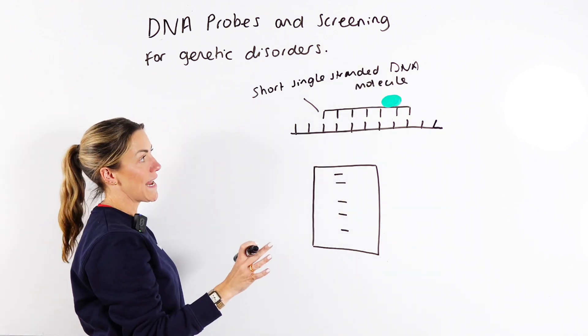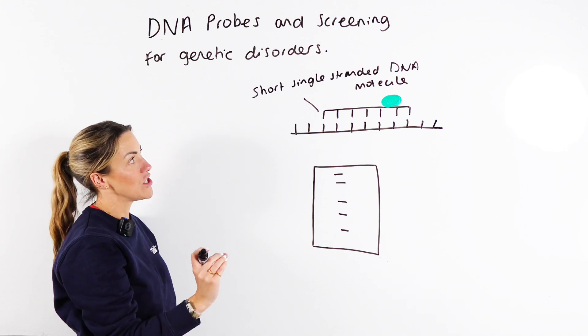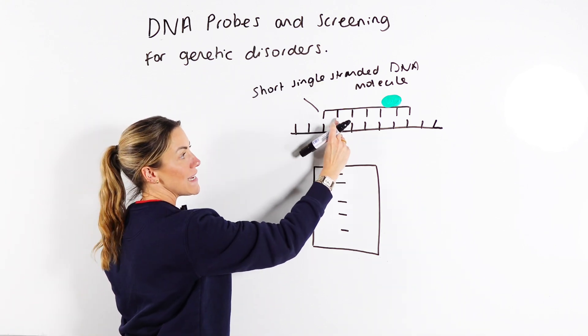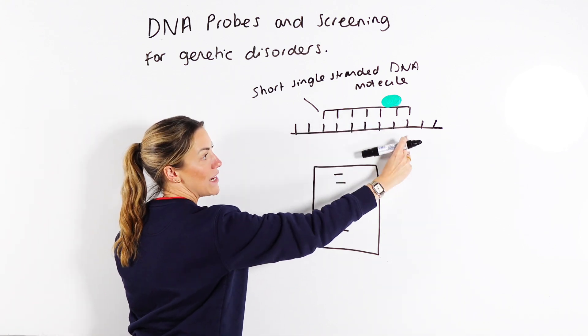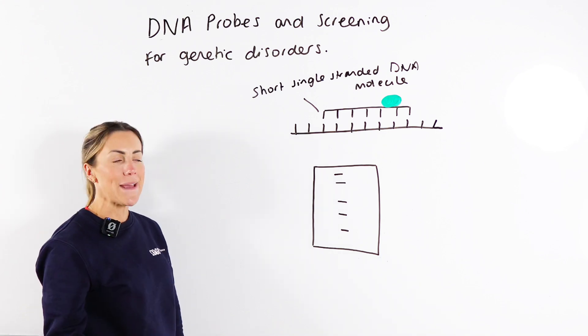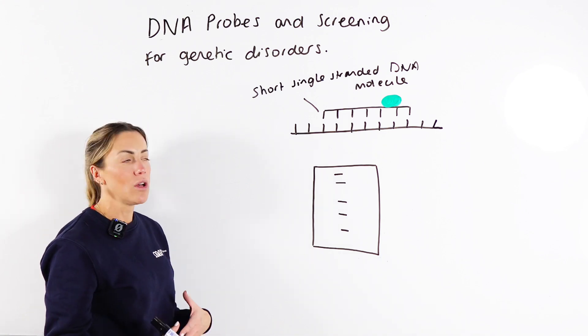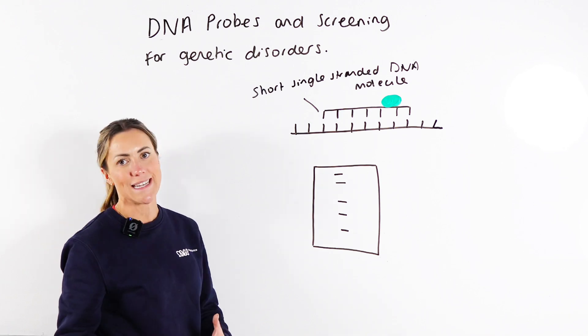So a short single strand of DNA and what's important about this gene probe is that the base sequence is complementary to a sequence of bases in the allele or the gene of interest.